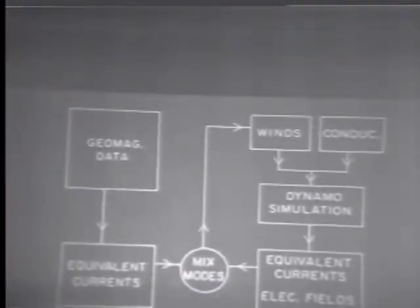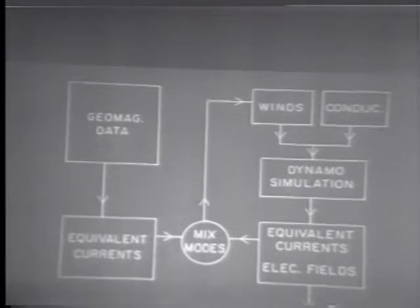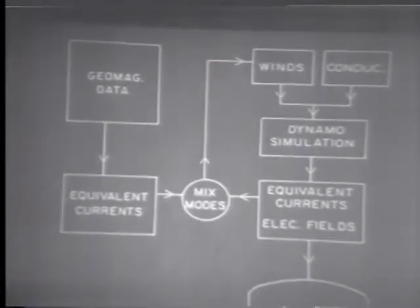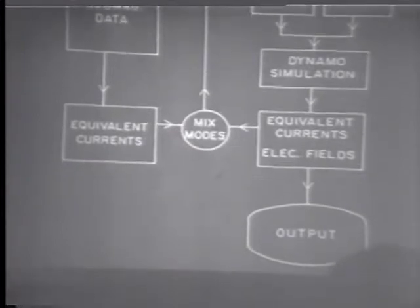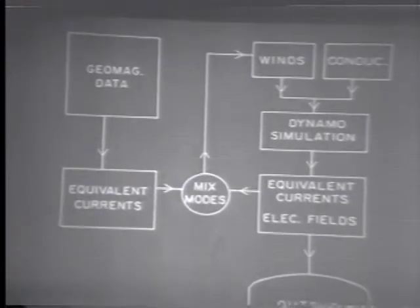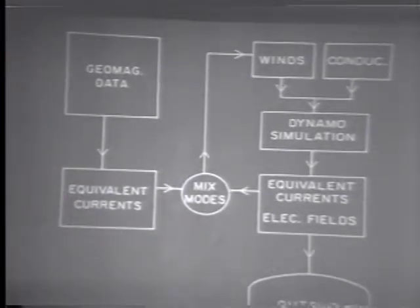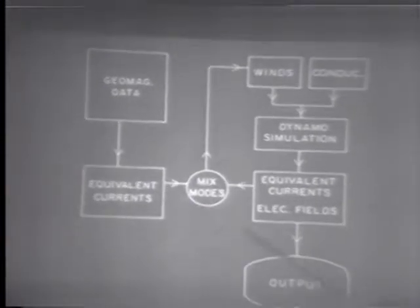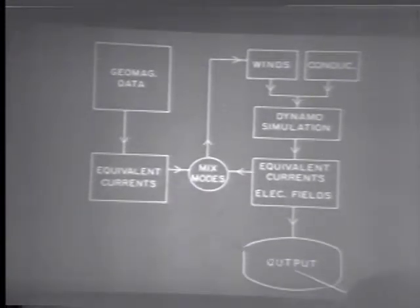My first slide shows schematically the manner in which we simulated the dynamo-action ionosphere. I shall confine my remarks to very quiet days. We select a quiet day and analyze the geomagnetic data, the H and D components, for a particular universal time. There are significant variations with universal time. By conventional methods of analysis, we derive the ground magnetic potential pattern, or if you prefer, the equivalent currents. As far as the theoretical model is concerned, we start with one particular tidal mode.